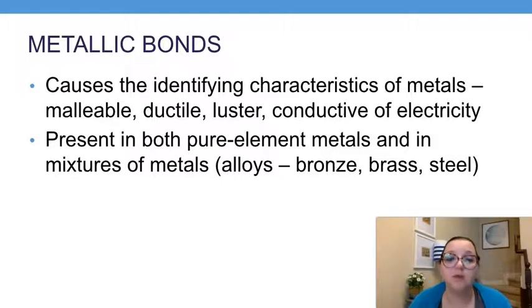That ends up giving metals some very distinct properties that we don't see with other types of substances. For example, it causes metals to be malleable and ductile. Malleable means that you can flatten it into a sheet, like you can hammer it down and get it really flat. Ductile means that you can draw or bend it into a wire. Both of those are about the movability of that substance. Rather than it being very brittle, it's very flexible.